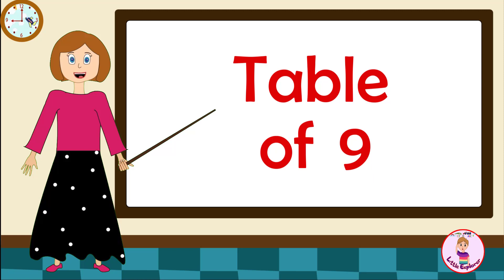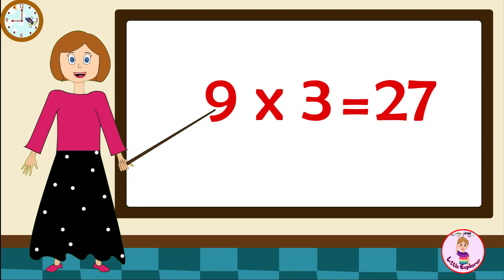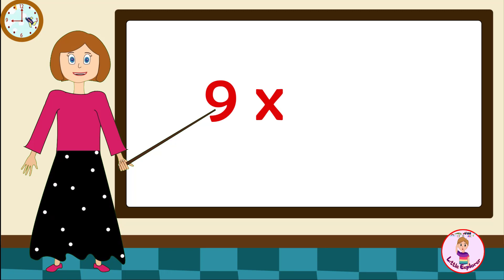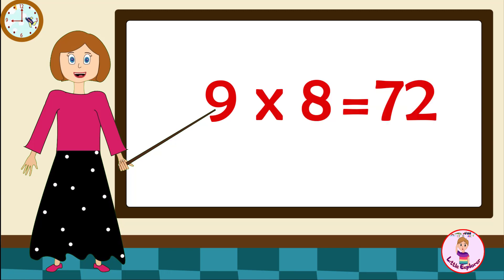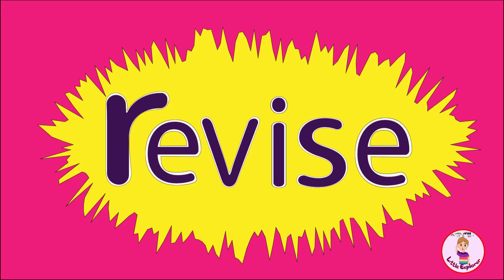Table of 9. 9 ones are 9, 9 twos are 18, 9 threes are 27, 9 fours are 36, 9 fives are 45, 9 sixes are 54, 9 sevens are 63, 9 eights are 72, 9 nines are 81, 9 tens are 90.